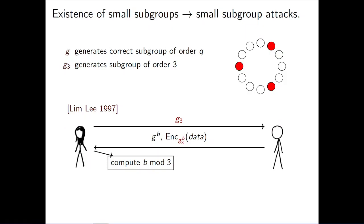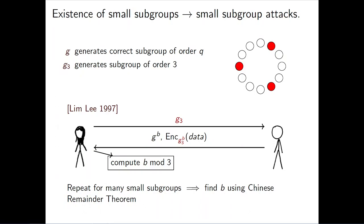So now let's get to the dragons. Whenever you're negotiating Diffie-Hellman key exchange in a group that has small subgroups, you leave the door open to these small subgroup attacks. Imagine that malicious Mallory, instead of sending her public key exchange value G to the A mod P, sends a generator of a small subgroup — which we call G3 here. When Bob receives this value, he computes G3 to the B, which is one of three elements in the group. Mallory can then brute force over those three elements to discover what B is mod 3. If she repeats this for many small subgroups, she can eventually recover the full B using the Chinese Remainder Theorem.